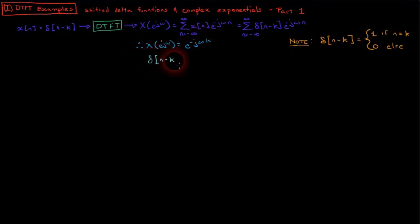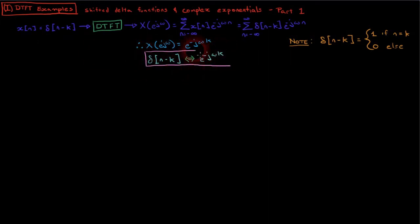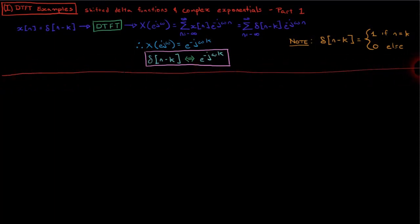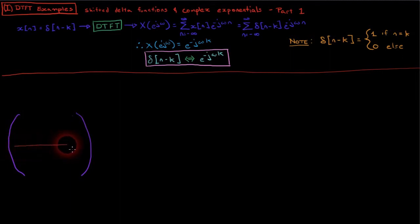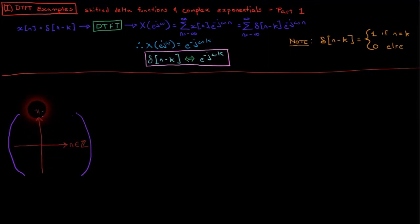And so we have shown that the DTFT pair of delta(n minus k) is e to the negative j omega k. To illustrate, let's plot the pair as related by the DTFT. This is a time-saving arbitrary choice, as it would be equally illustrative to plot the pair as related by the inverse DTFT.